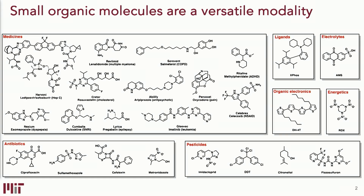We're going to start by thinking about the small molecule modality — the types of structures I tend to think about day to day. Small organic molecules have molecular weights between maybe 50 and 500. They're made up of the familiar carbon, hydrogen, nitrogen, oxygen, and a few others. They exhibit a pretty extraordinary range of functions: small molecules make up the majority of our therapeutics, but we also use them in agriculture, material science, and defense applications. They're an incredibly broad class of structures.